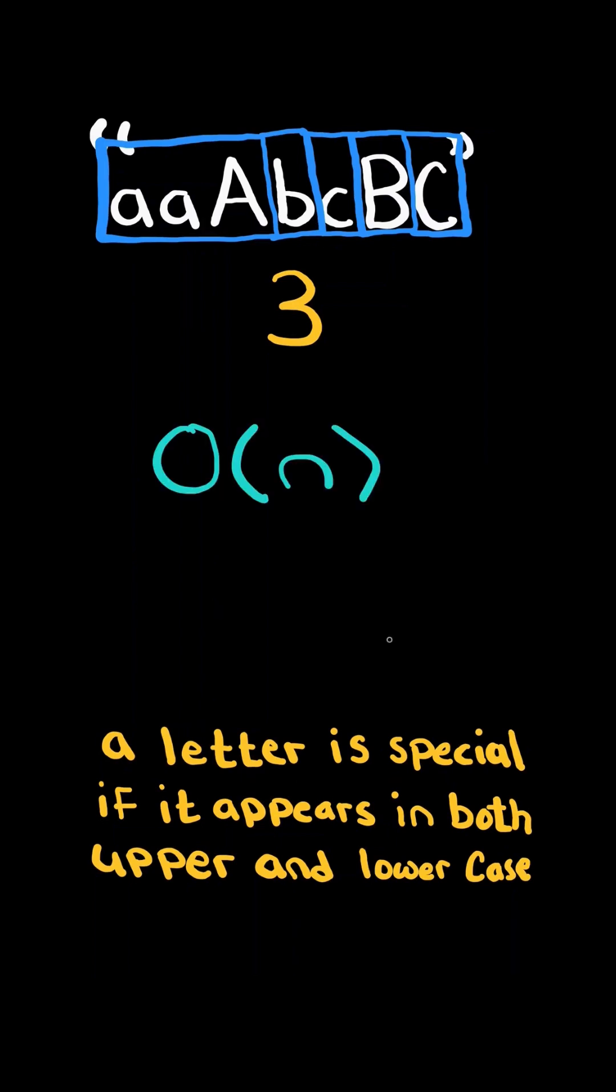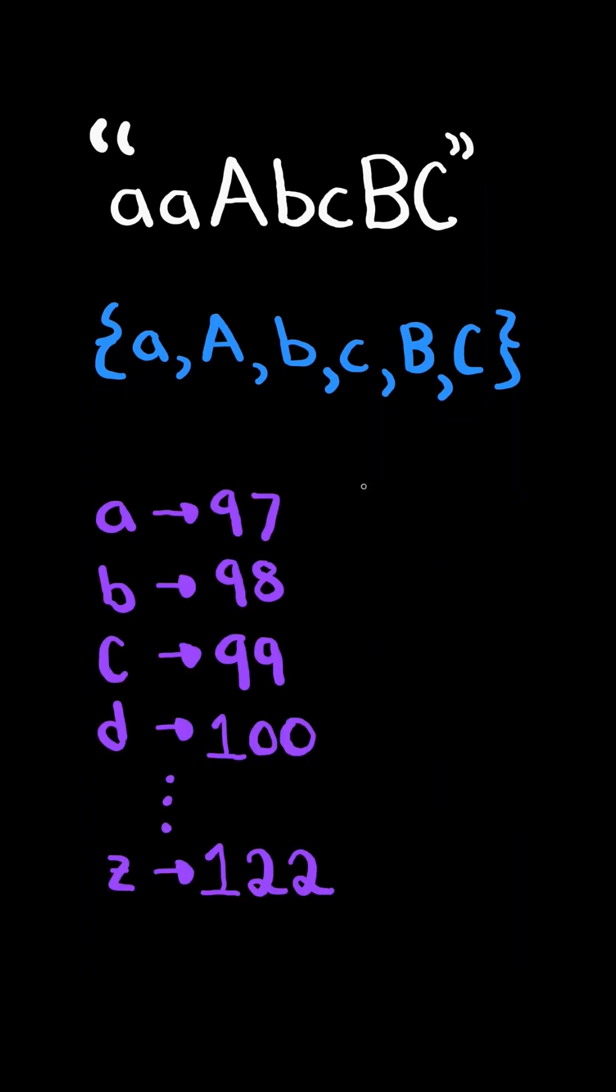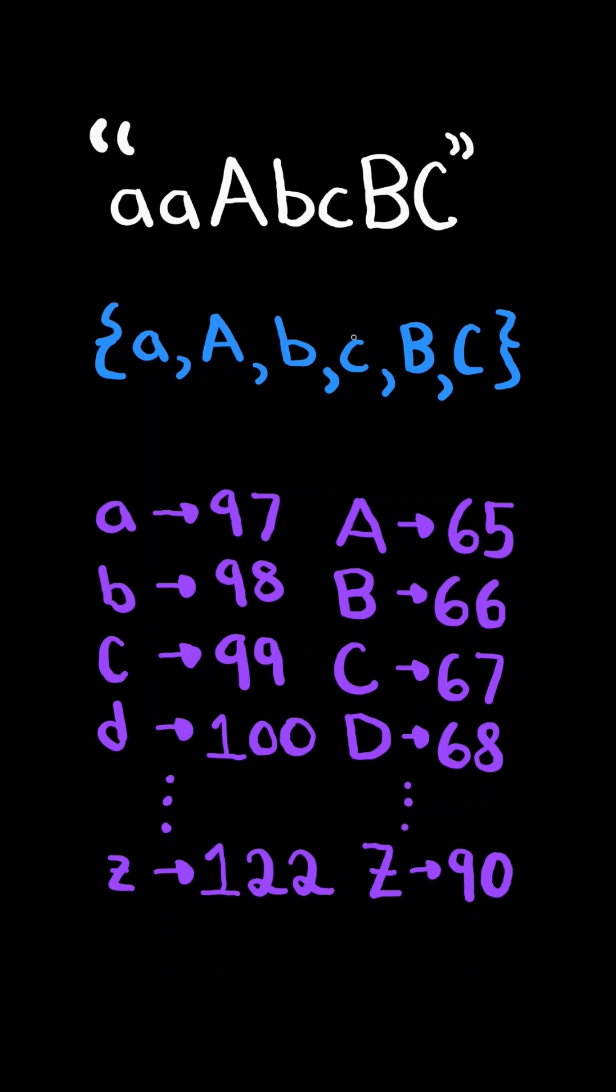We will solve this in O of N time. First, we convert the string into a set of characters, and consider the ASCII table for lowercase English letters. Every character in the table maps to its decimal representation, and furthermore consider the ASCII table for the uppercase English letters.